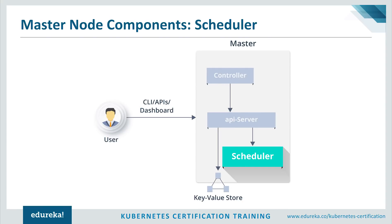The scheduler schedules work to different worker nodes. It has resource usage information for each worker node and also knows about the constraints that users may have set. Before scheduling work, the scheduler also takes into account quality of service requirements, data locality, affinity, anti-affinity, and many other parameters. The scheduler schedules work in terms of pods and services.